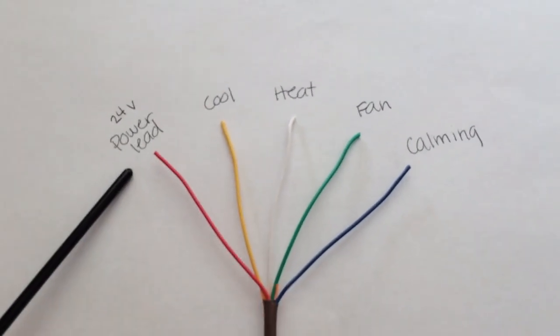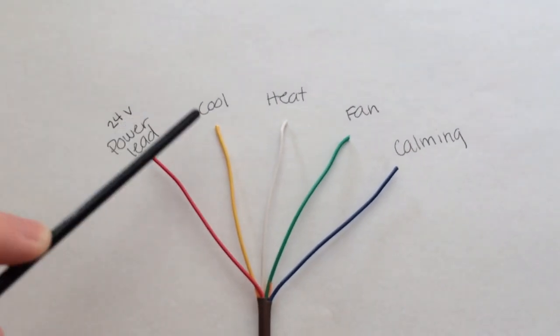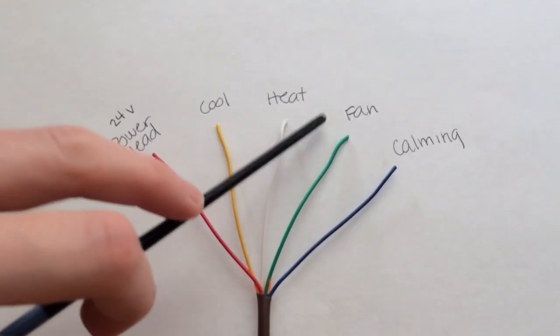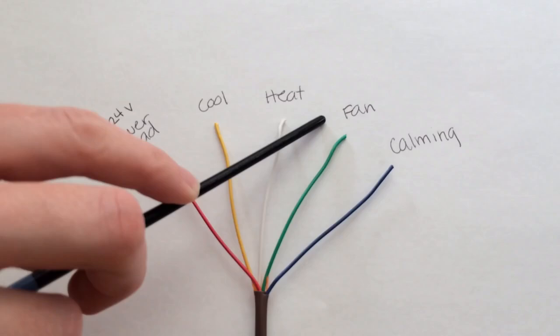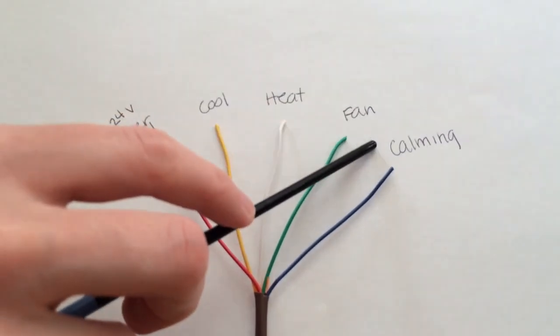So red is the 24 volt power lead, yellow is cool, white is heat, green is for the fan or blower motor, and blue for calming.